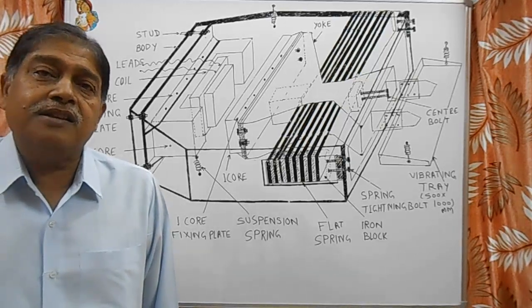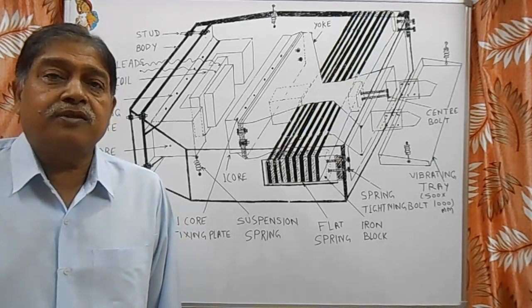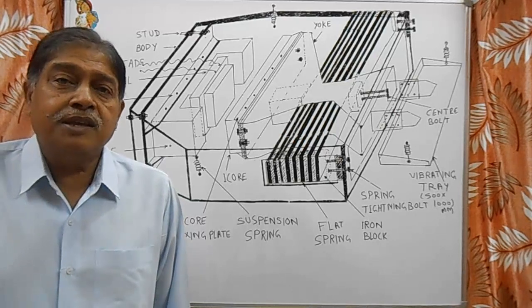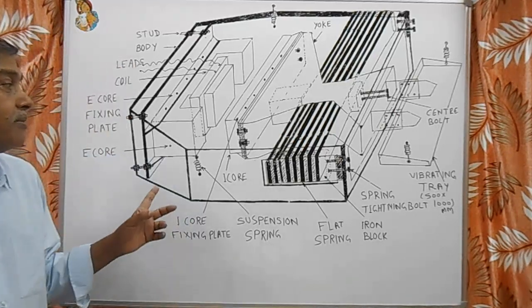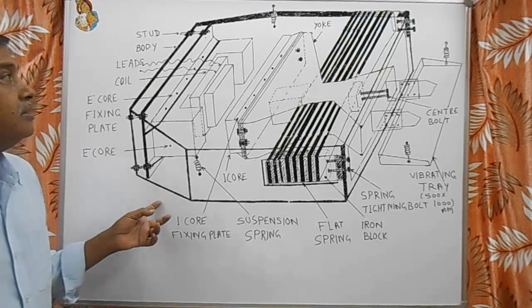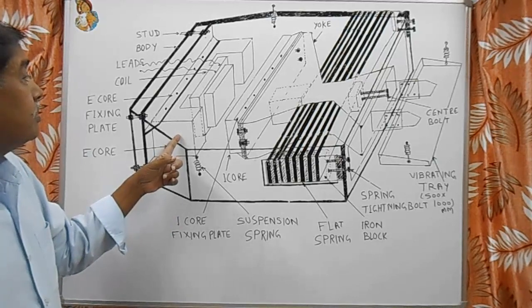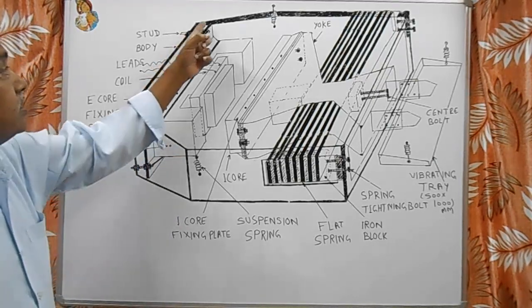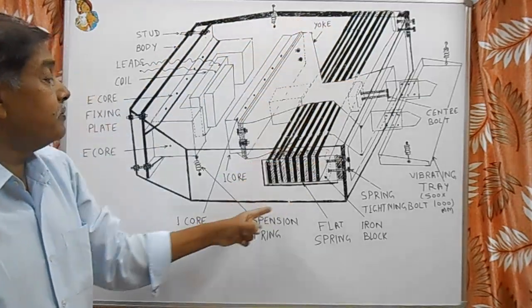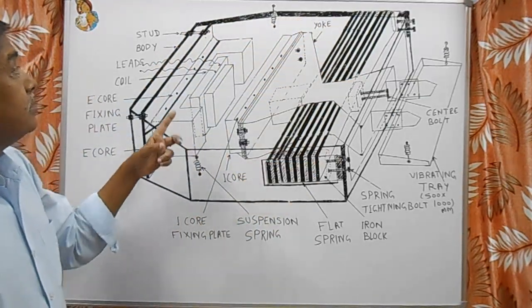Below the bunker, the feeder is fixed for feeding material to the conveyor belt. Here the internal diagram of the vibratory feeder is shown. This is the first part, the E-core. This is the E-core fixing plate. This is the complete body of the feeder. Here is the I-core. These studs are provided to adjust the distance between I-core and E-core.